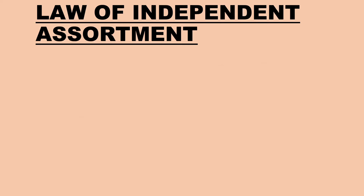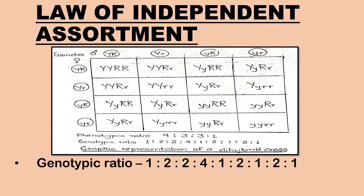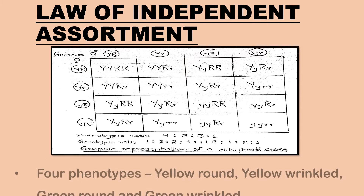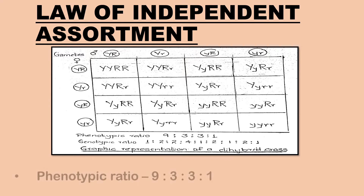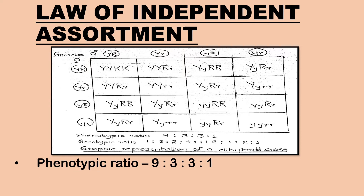The genotypic ratio in a dihybrid cross is 1:2:2:4:1:2:1:2:1. Due to dominance there are only four phenotypes: yellow round, yellow wrinkled, green round and green wrinkled. The phenotypic ratio is 9:3:3:1.